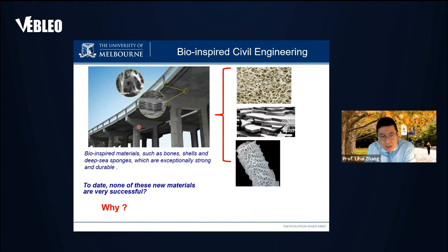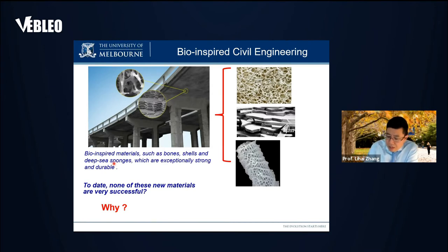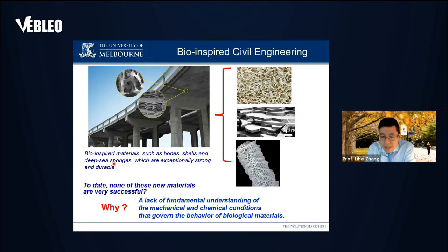There is also a range of bio-inspired materials such as bones, shells, and deep sea sponges with unique structures. If we apply these structures to engineering, we could build lighter and stronger bridges and engineering structures. However, none of these new materials have been very successful yet, because of our lack of fundamental understanding of the mechanical and chemical conditions that govern the behavior of biological materials.